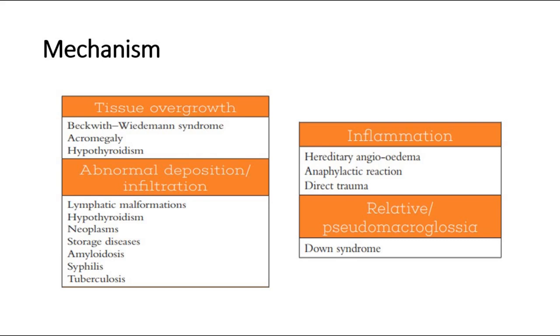Inflammation is seen in hereditary angioedema, anaphylactic reaction, or direct trauma. Whereas relative or pseudo-macroglossia is seen in Down syndrome.